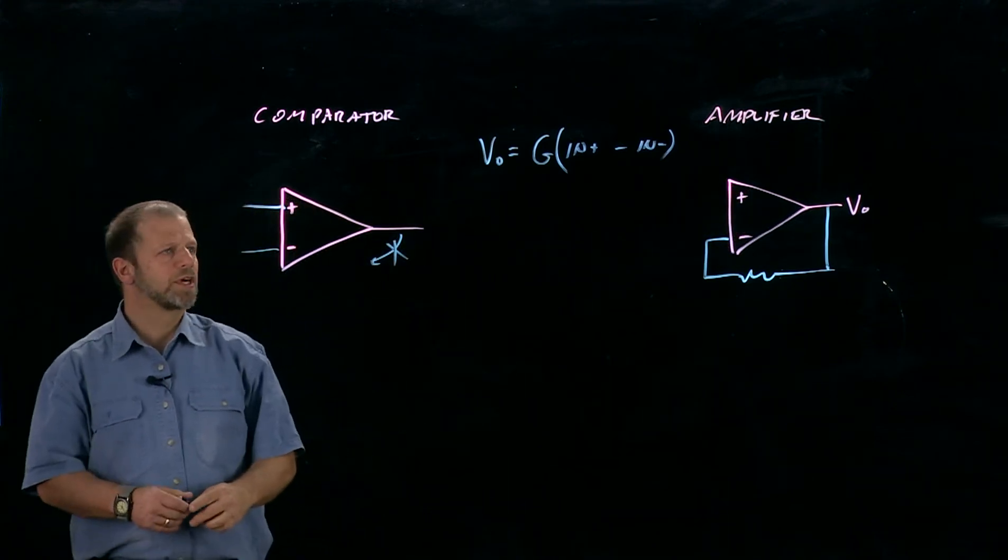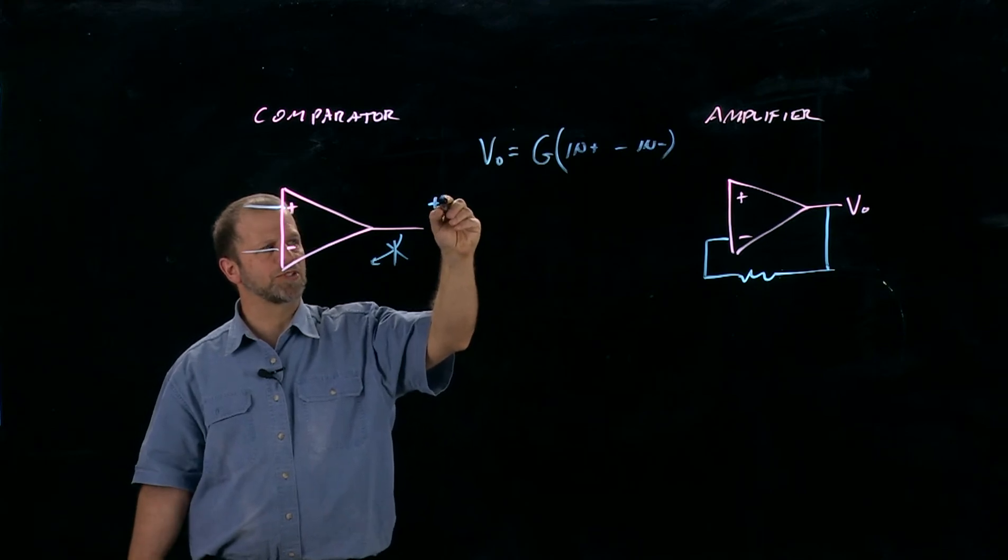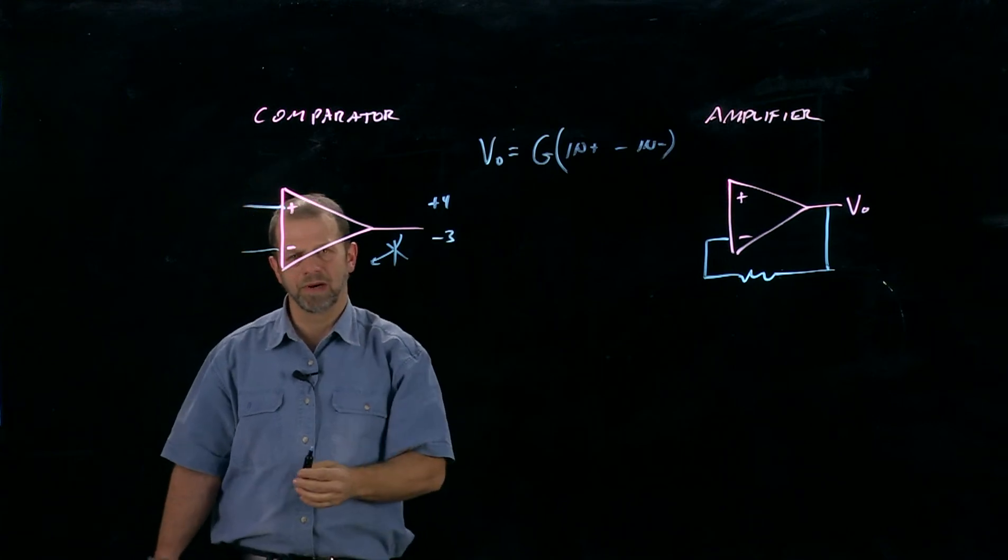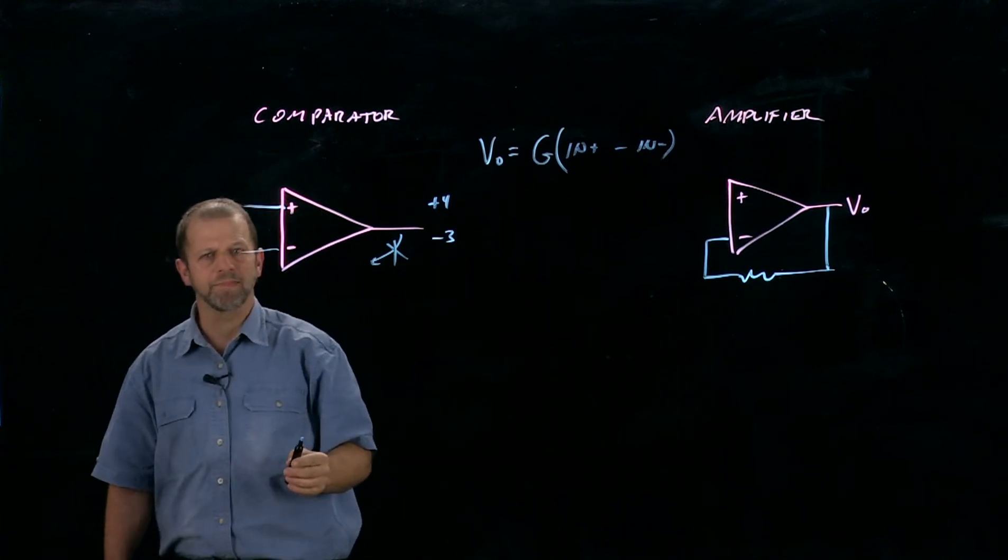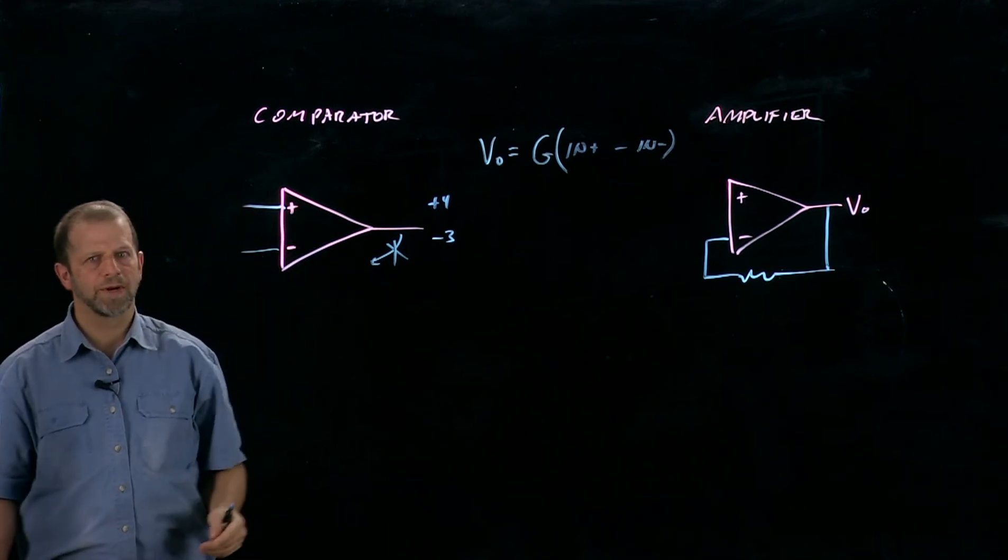Now when would you use this? If all you want is for the output to either go as positive as possible, typically about plus 4 volts, or as negative as possible, typically about minus 3 volts for our op-amp, in response to whichever of these is more positive, then you'd use a comparator.